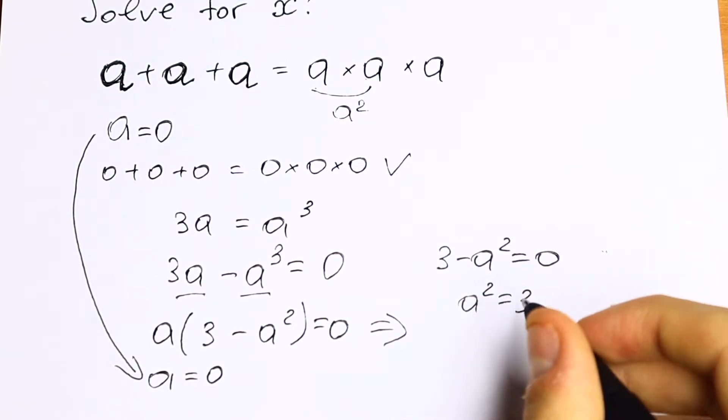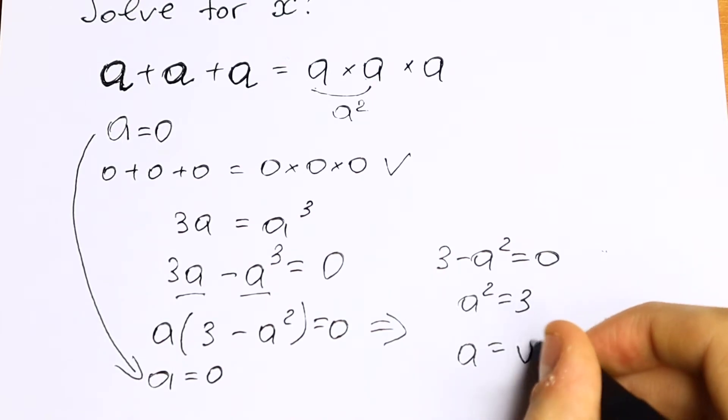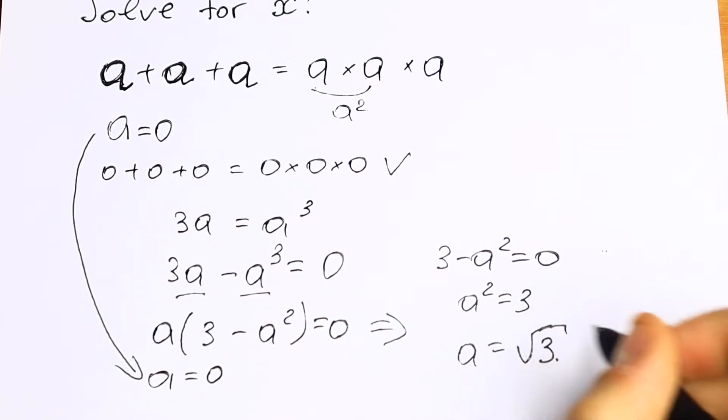And if we take a square root from both sides we will have that a equal to square root of 3. And this will be our second root.